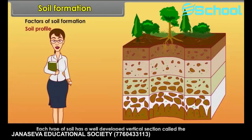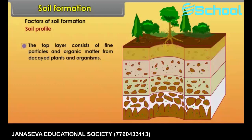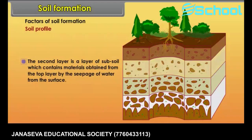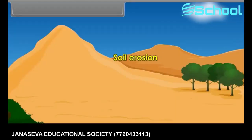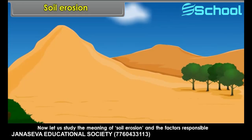Soil profile. Each type of soil has a well-developed vertical section called the soil profile. The top layer consists of fine particles and organic matter from decayed plants and organisms. The second layer is a layer of subsoil.